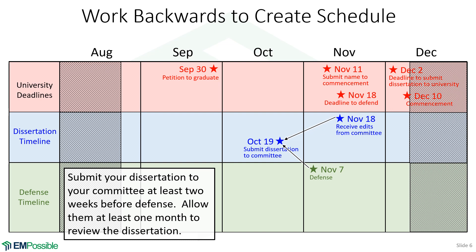From here, you want to submit your dissertation to your committee at least two weeks before you defend. That gives them time to look it over, understand your topic, and prepare themselves for your defense. Also, you want to give them at least a month to have your dissertation to make edits that you can then go and revise. So now we're looking at submitting your dissertation to your committee by mid-October.